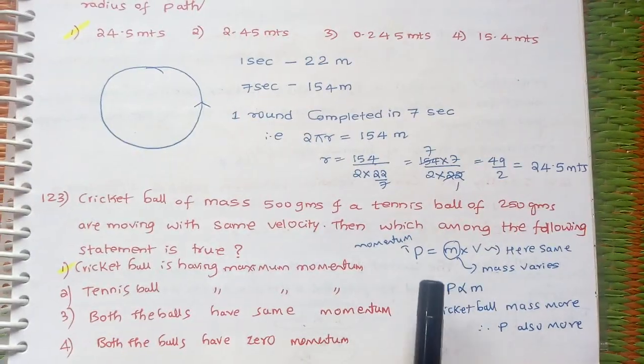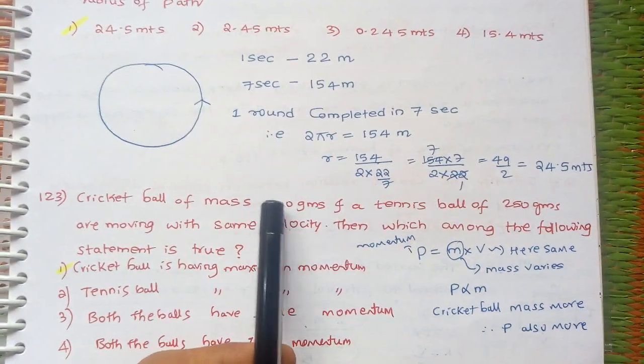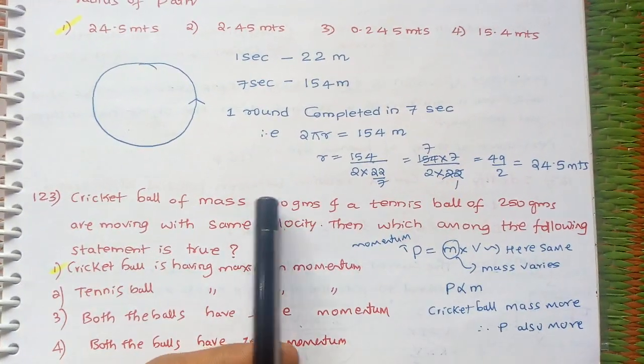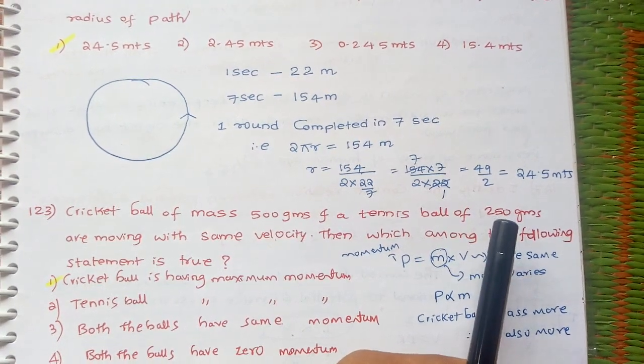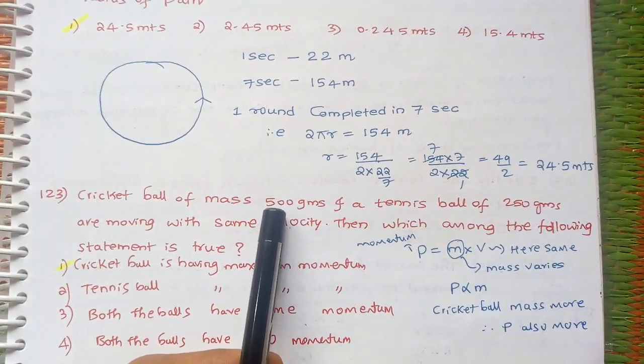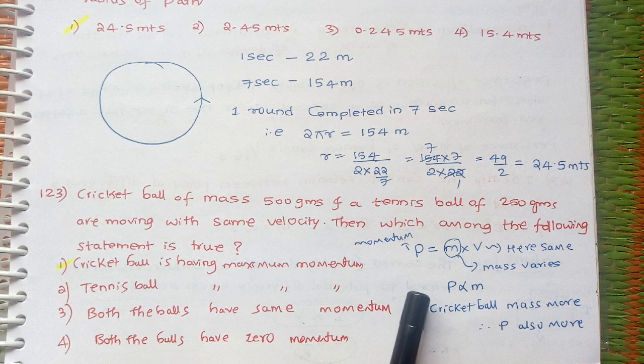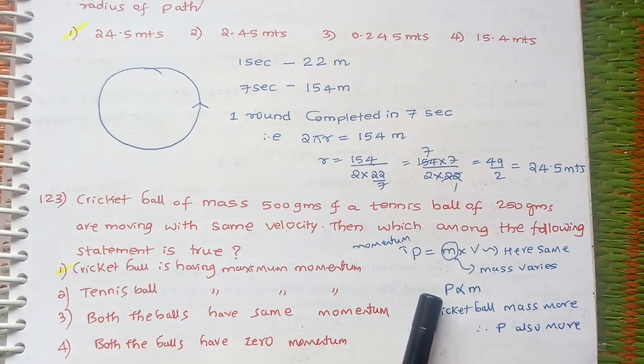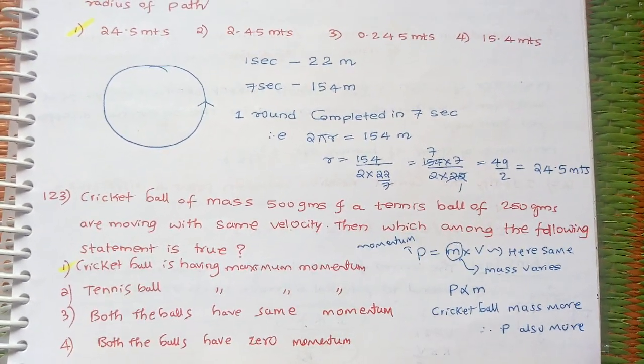For this reason, the cricket ball's mass is 500 grams compared to the tennis ball's 250 grams. Cricket ball has more mass, therefore its momentum is also greater. The answer is cricket ball having maximum momentum.